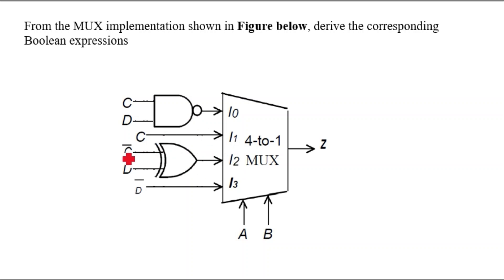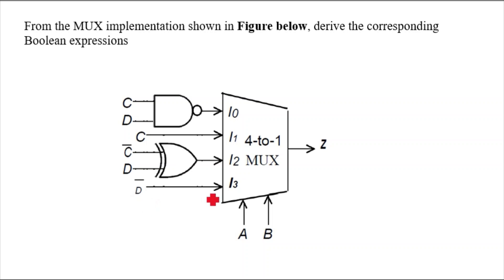C is directly connected, an XOR gate is given, and the inputs are C-bar and D. Here D-bar is the input. Whenever we complement one of the inputs, the XOR gate starts working like a XNOR gate. I will derive the function for that and let you know. I3 is D-bar.